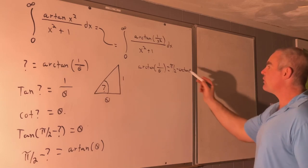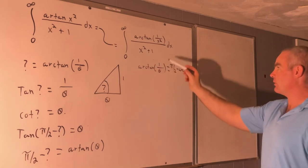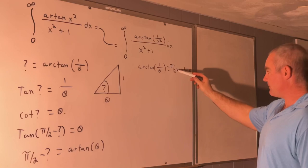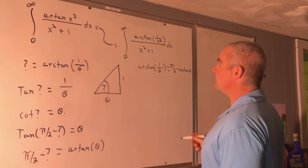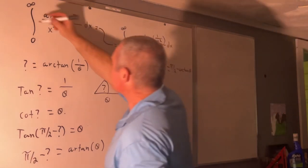With that, let's continue. And so of course, this means that arc tangent 1 over x squared is equal to pi over 2 minus arc tangent of x squared. So let's label this I.